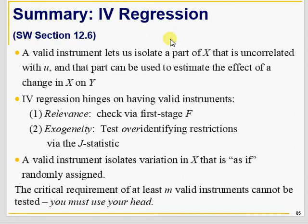To summarize instrumental variable: there are three key things. First, we need to disentangle the part of X that is uncorrelated with U and use it to determine Y. Second, relevance is tested by the F-test and exogeneity by the J-test. A valid instrument divides X into two parts — X-hat plus U-hat — but you must use your head.